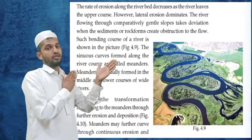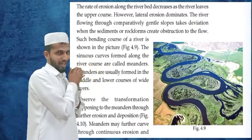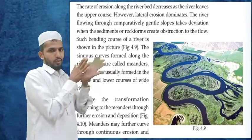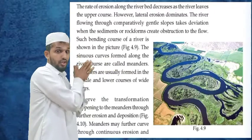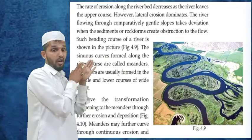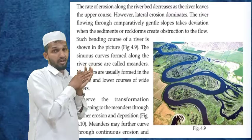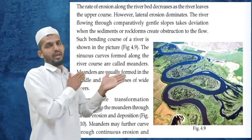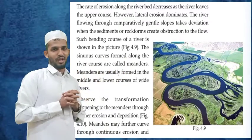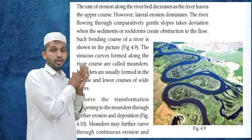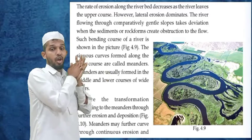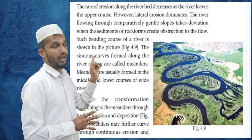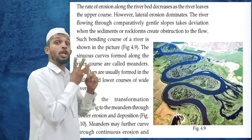Such a bending course of the river is shown in the picture. The serious curves formed along the river are called meanders — meanders are like a curved flow of the river. Meanders are usually formed in the middle or lower course of the river.